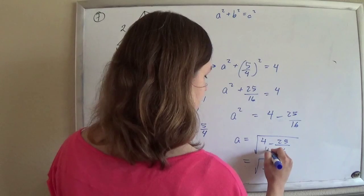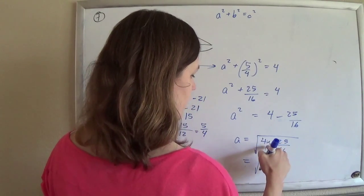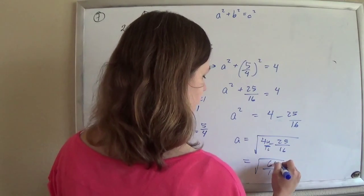And so if I get a common denominator of 16, 4 times... so multiply this guy top and bottom by fancy form of 1, 16 over 16. So 4 times 16 is 64. So that's 64.